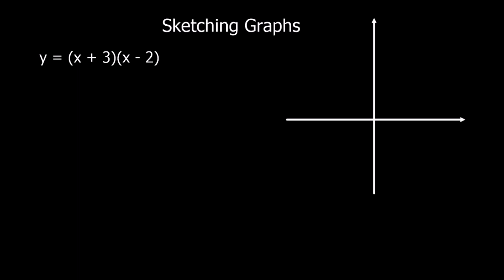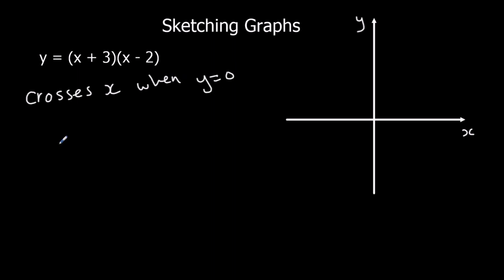So we need to be able to sketch graphs. What we need to know is: a graph crosses the x-axis when y equals 0, and it crosses the y-axis when x equals 0. In order to work out what the graph looks like, we need to know where it crosses the x-axis, where it crosses the y-axis, and what shape it is.